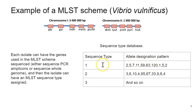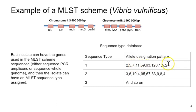For example, maybe for sequence type number 1 for Vibrio vulnificus, any isolate belonging to that sequence type would have GLP allele 2, GAR allele 5, MDH allele 7, METG allele 11, and so forth. It's the combination of these numbers that gives us a code that can then be assigned to a sequence type, and then you have a lot of information about that particular organism quickly available to you.